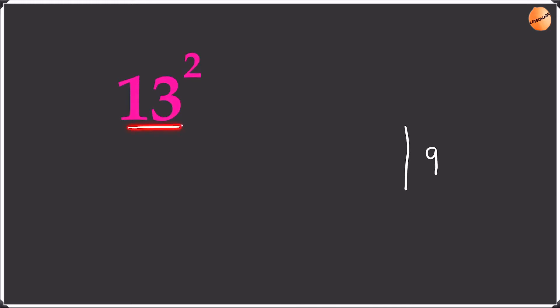Let's start with 13 squared. First, we're going to square the unit, so 3 squared is 9. Then we're going to find the difference from 10 — so 13 minus 10 is 3, and we write the 3 down. The reason we're finding the difference from 10 is because this number starts with 1.